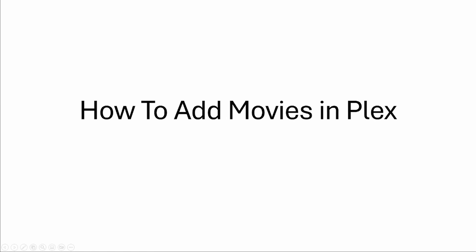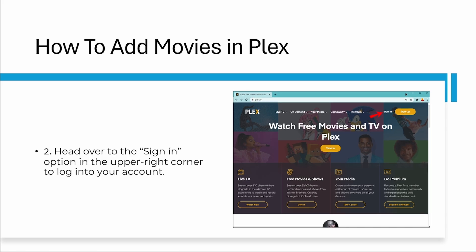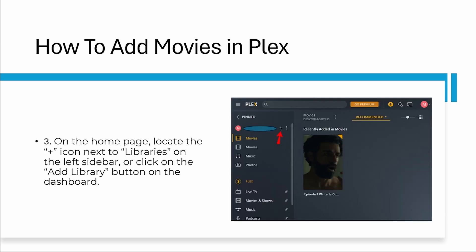In this video I'll be showing you step by step how to add movies in Plex. Step one is open your browser and go to Plex's website. Step two is head over to the sign in option in the upper right corner to log into your account.